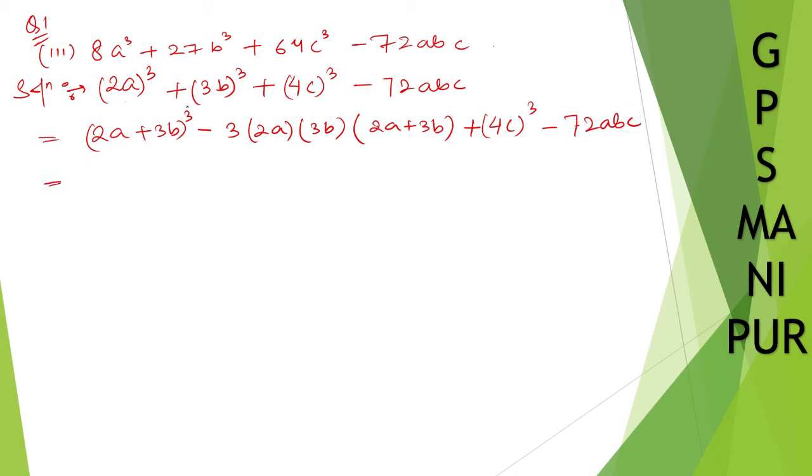a plus b whole cube minus thrice ab plus minus thrice ab a plus b. Now, a plus b whole cube this one write down and take this one and write down plus 4c whole cube.